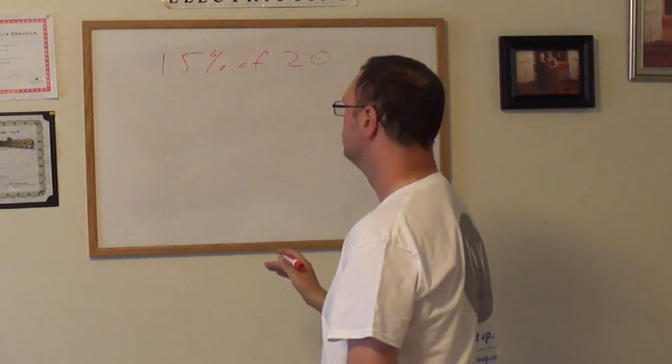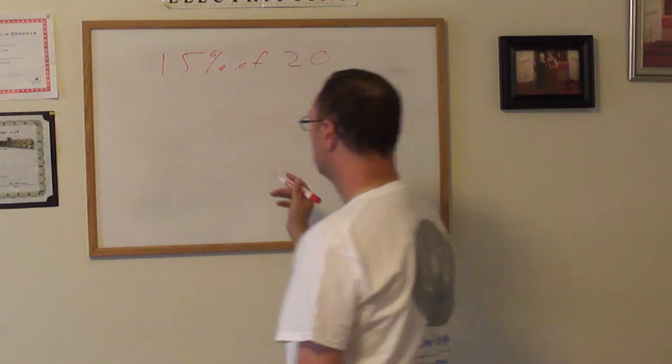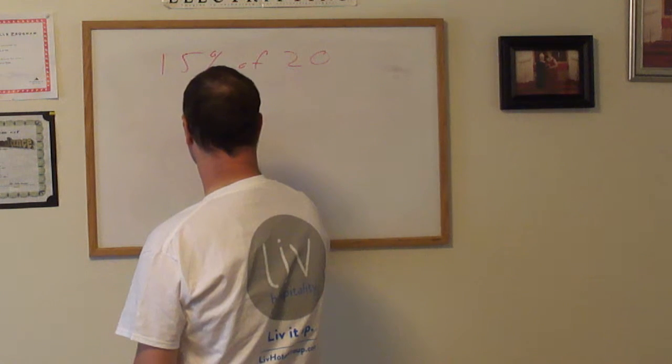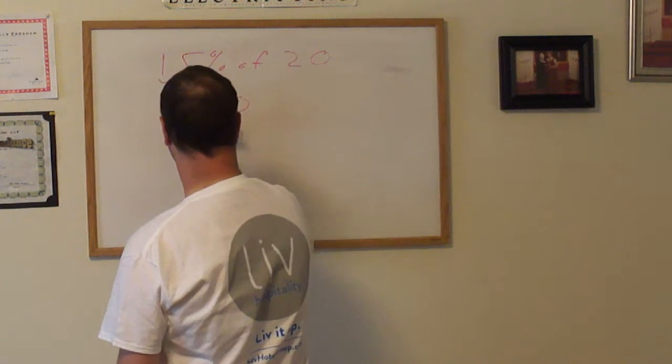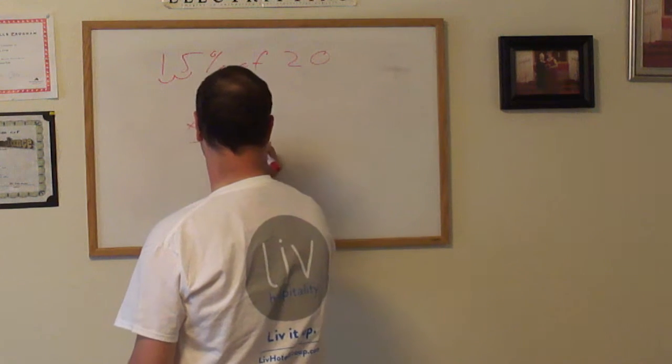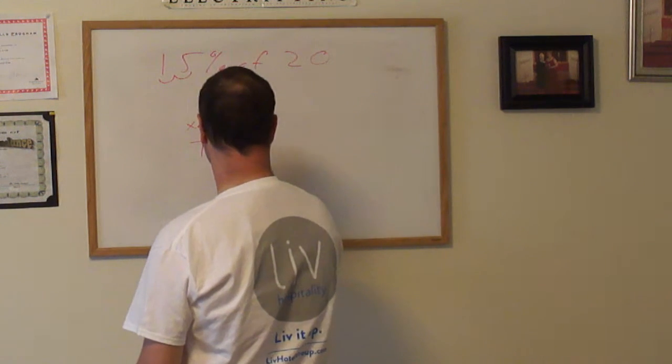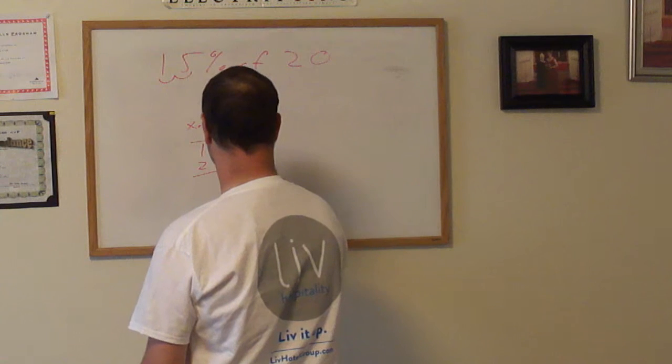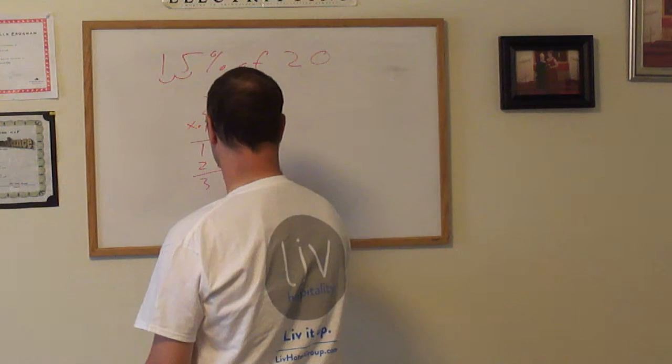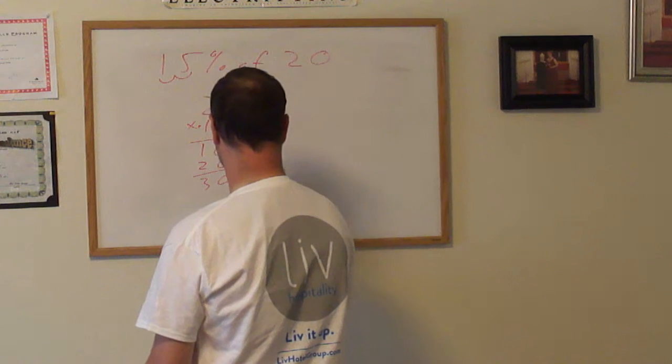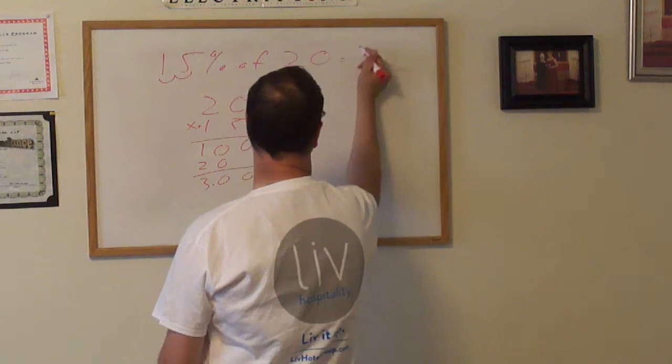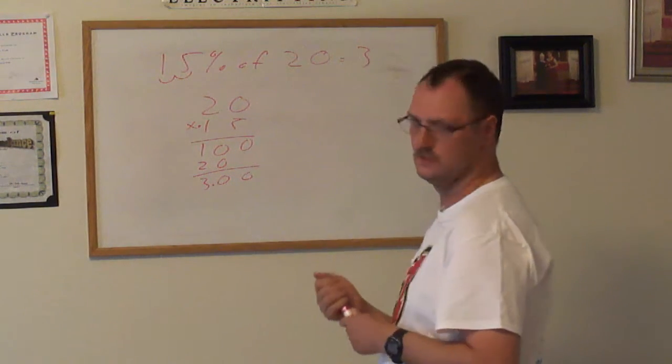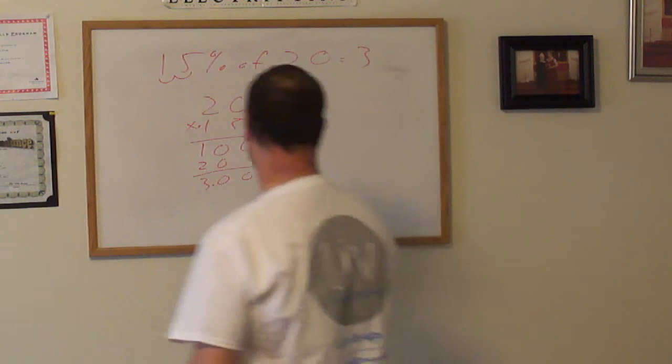50% of 6 points. The best thing to do is multiply. So we're going to multiply 6 and you have to use the decimal form, 0.50. Which is 3. And that's 50% of 6 points.